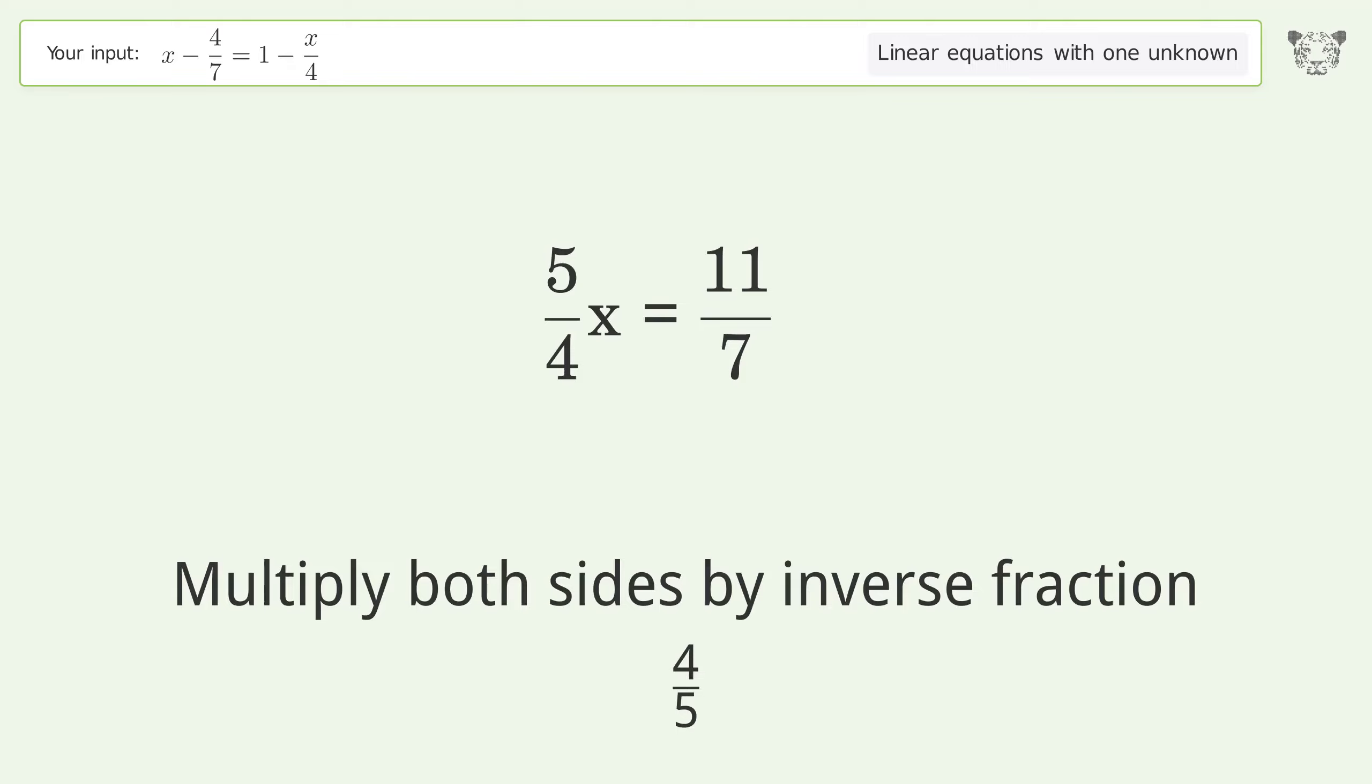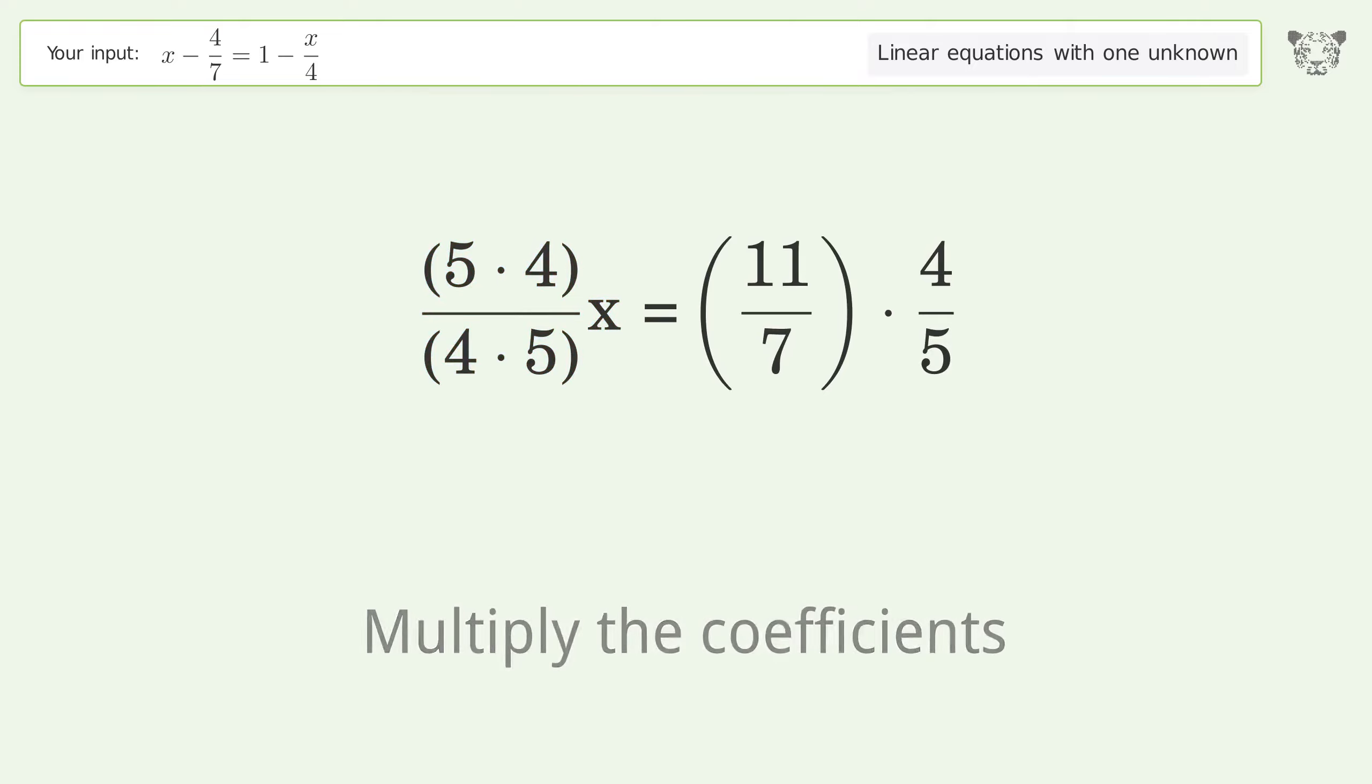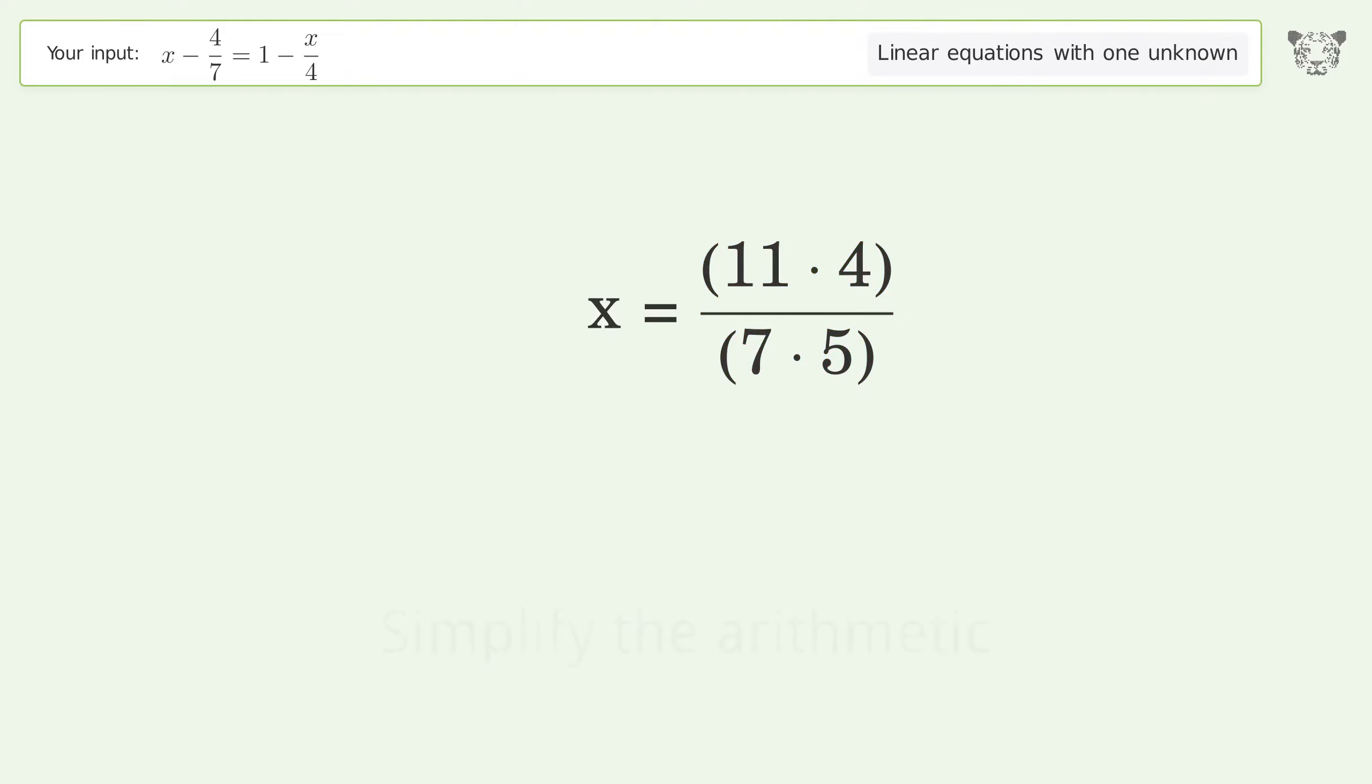Multiply both sides by inverse fraction 4 over 5. Multiply the coefficients. Simplify the fraction. Multiply the fractions. Simplify the arithmetic. And so the final result is x equals 44 over 35.